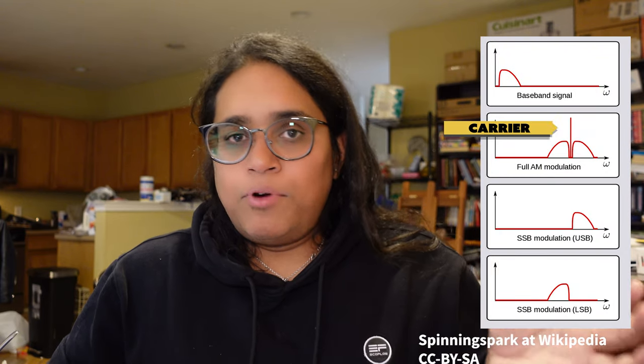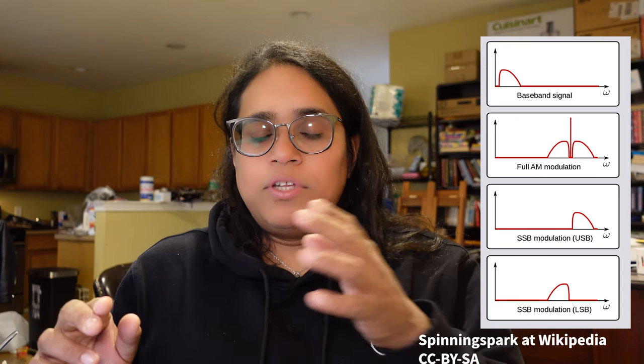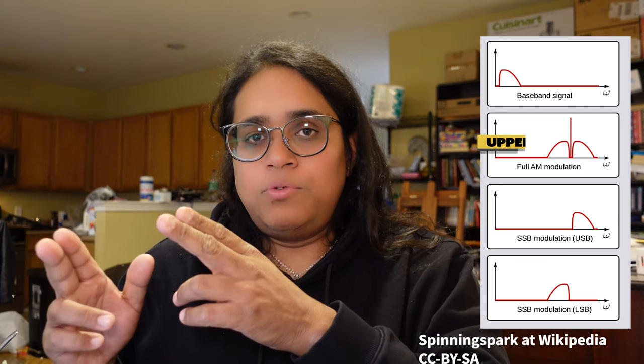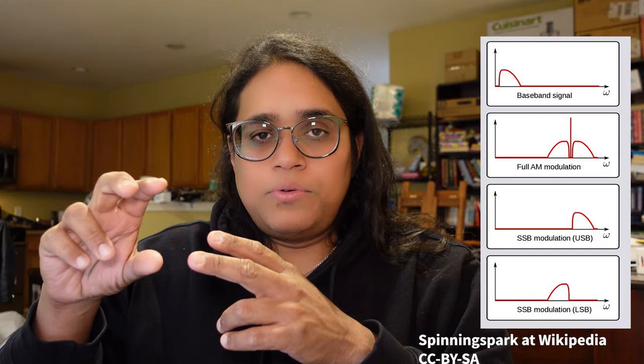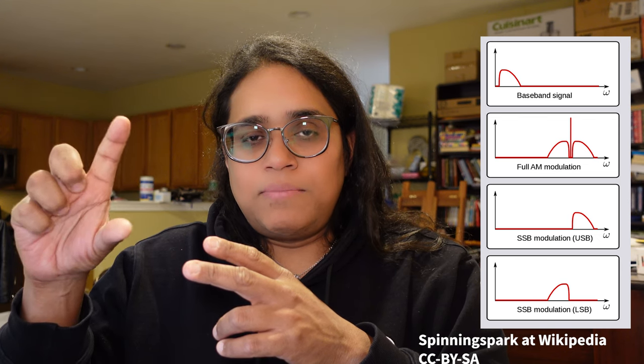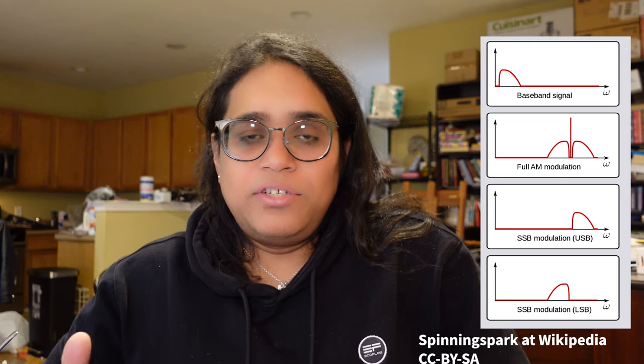The best explanation I could find comes down to this: to produce sidebands, you mix your audio with a carrier. For example, you might have a 14.2 megahertz carrier and mix that with a 2.4 kilohertz wide audio signal, giving you 14.2 MHz plus 2.4 kHz and 14.2 MHz minus 2 kHz — that's the upper sideband and the lower sideband. You then eliminate one of those, suppress the carrier, and you end up with a single sideband.